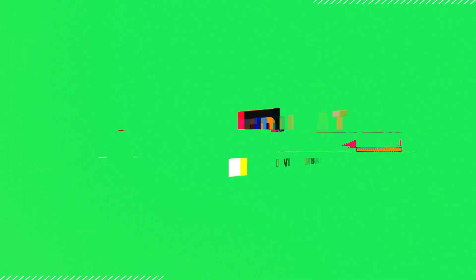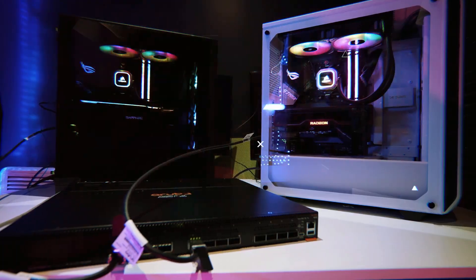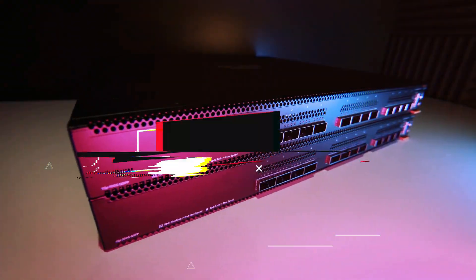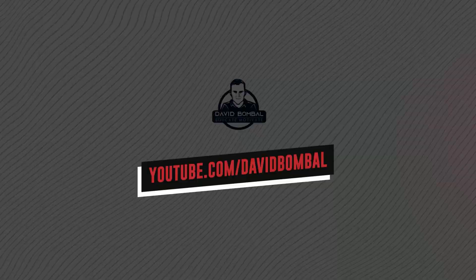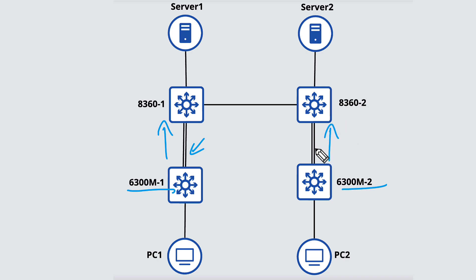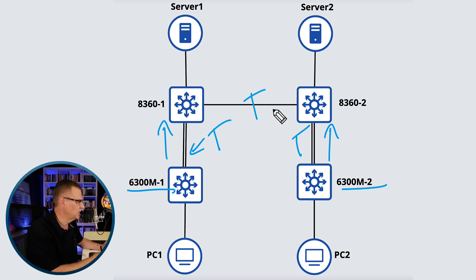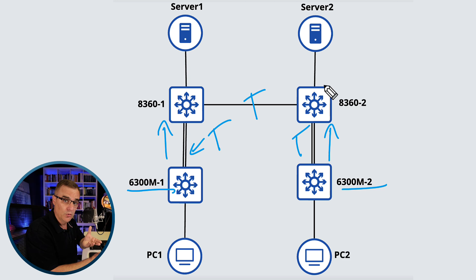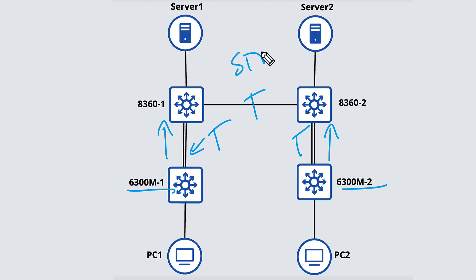Let's get started. In this topology, I've got two links from my first 6300 M switch to my core 8360, and also two links from the 6300 to the core 8360. At the moment, these links are configured as trunk ports — in other words, they are layer two ports, which means that spanning tree protocol will be blocking one of the ports.